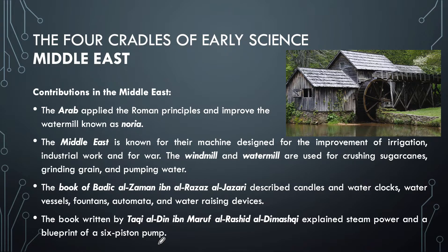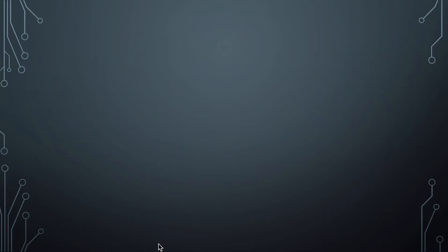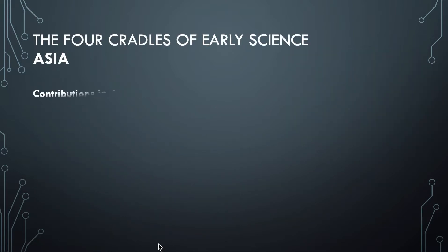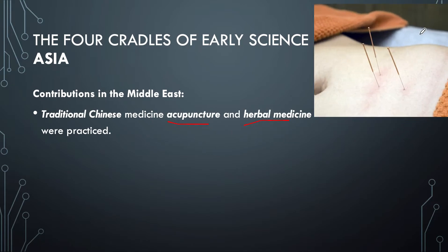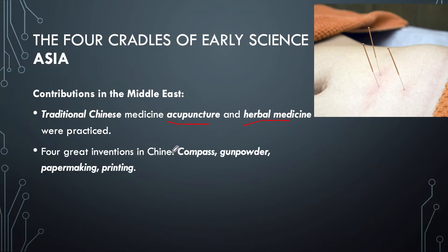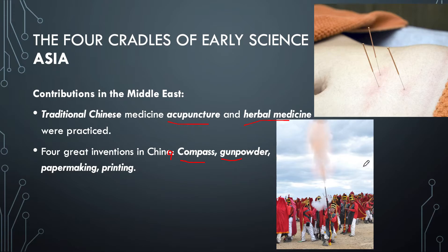Moving on to Asia — specifically focusing on China, which has a lot of contributions. Traditional Chinese medicine such as acupuncture and herbal medicine were practiced; here is one example of acupuncture with needles being applied to the skin. The four great inventions of China are: the compass, gunpowder (seen in their firecrackers), paper making, and printing.